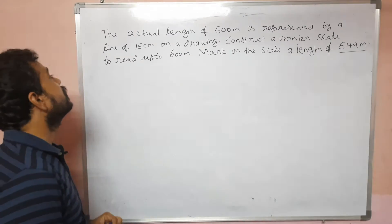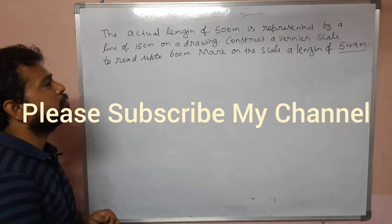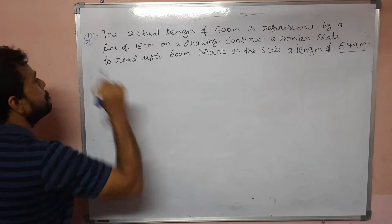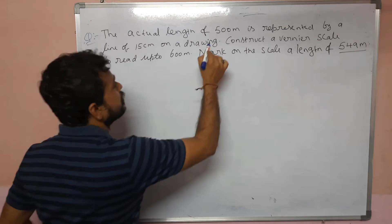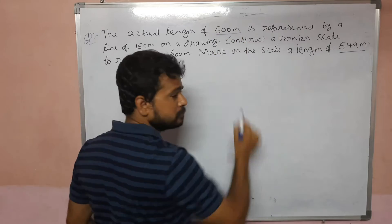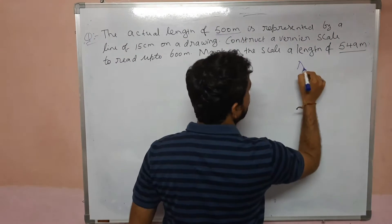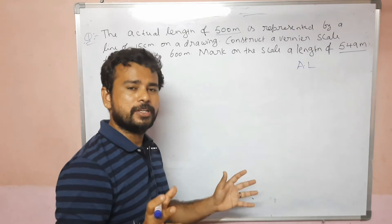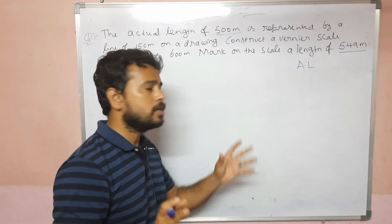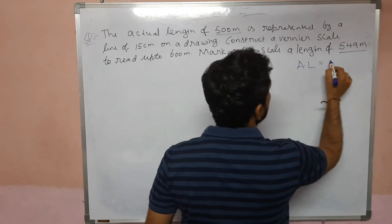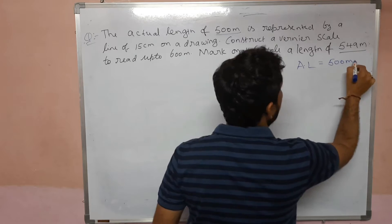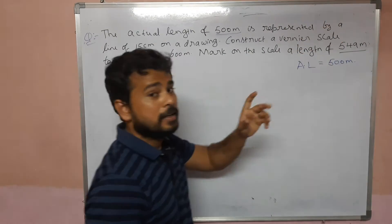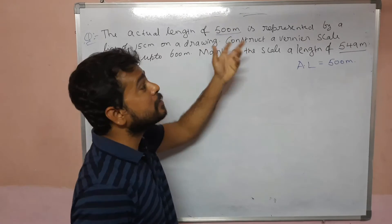Okay students, let's go to Vernier Scale. The actual length of 500 meters — something that is on this building or road. Then the length is 500 meters. This actual length is represented by 500 meters.